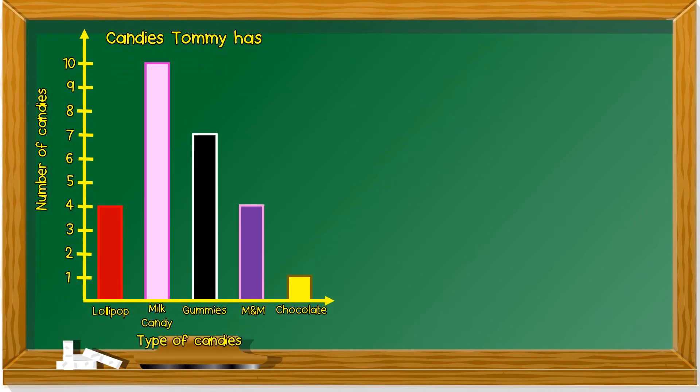Let's take a look at another bar chart. Okay. This bar chart is about candies Tommy has. What type of candies does Tommy have? There's lollipop, milk candy, gummies, M&M, and chocolate.